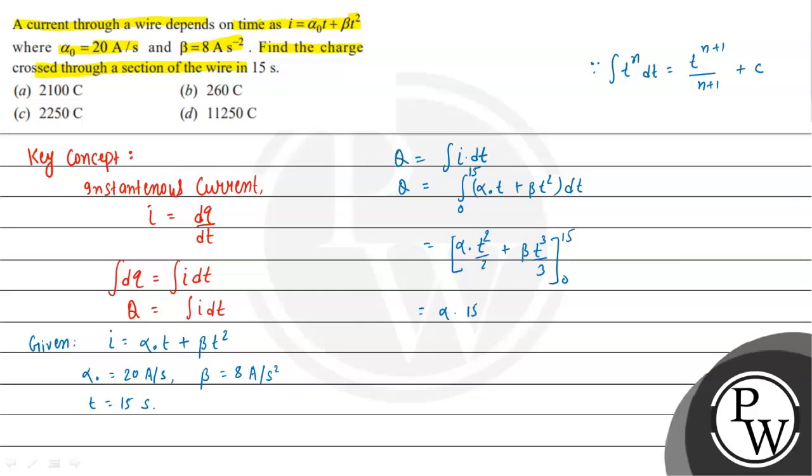This equals α₀(15²)/2 + β(15³)/3. At the lower limit, the value is 0. Substituting values: 20(225)/2 + 8(3375)/3 = 2250 + 9000 = 11,250 coulombs.